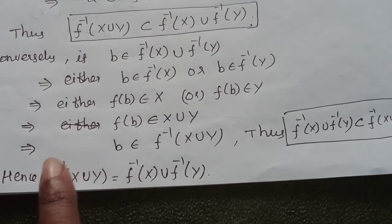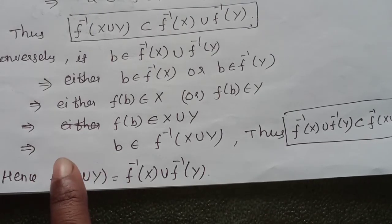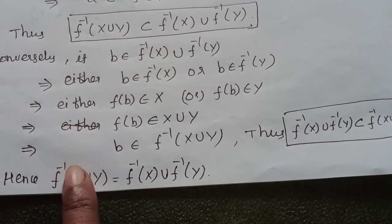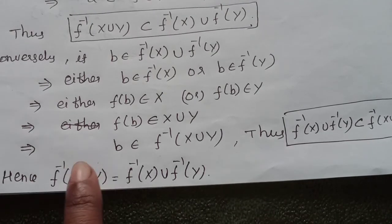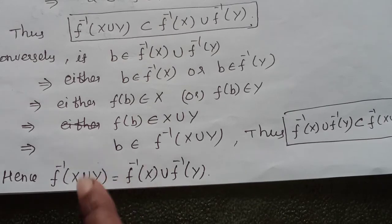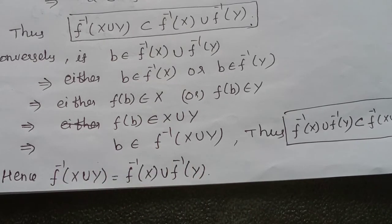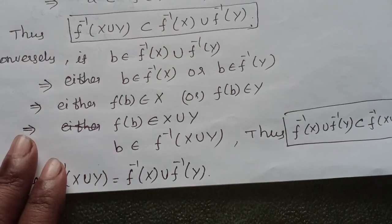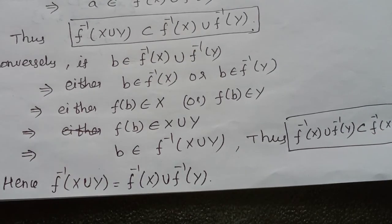Since each set is contained in the other, we can equate the two. Therefore, the inverse image of the union of two sets is equal to the union of inverse images. Hence proved. This is a university first mark question. Thank you.